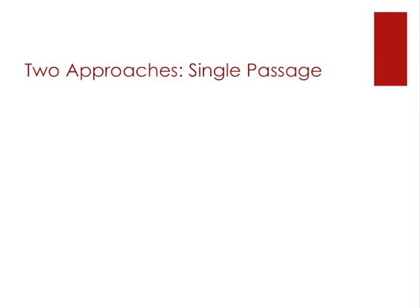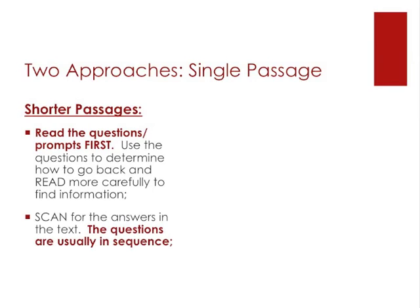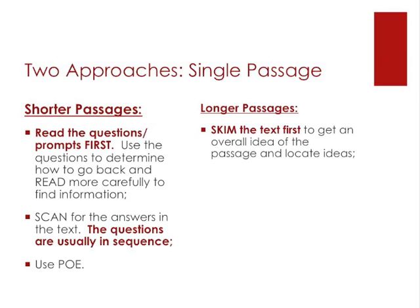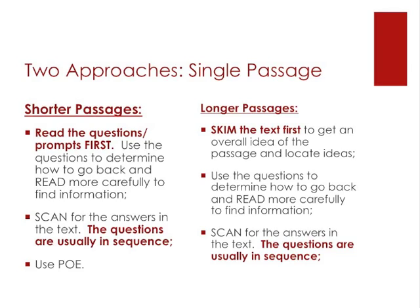For a shorter single passage, it's probably okay to look at the questions or prompts first, use those questions to determine how to go back and read more carefully to find the answer, scan for the answers in the text, and remember: the questions are usually in sequence. Then use the process of elimination to remove wrong answer choices. For longer passages, it's probably a good idea to at least skim the text first, just to get an overall idea of the passage and locate ideas. Then use the questions to determine how to go back and read more carefully, scan for answers, and use the process of elimination.